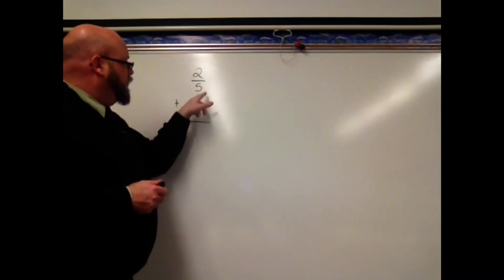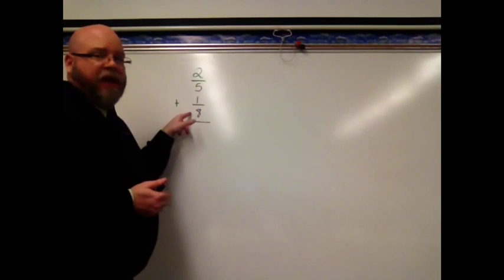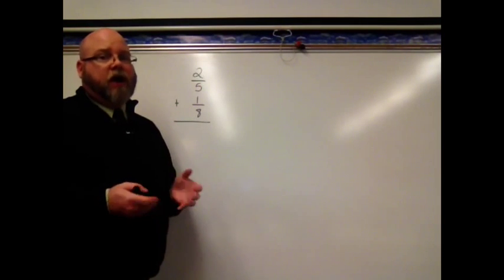Looking at those denominators, 5 and 8. I can't count by 5 and get to 8, and I can't count by 8 and get to 5. So what I have to do is find what we call the least common multiple.